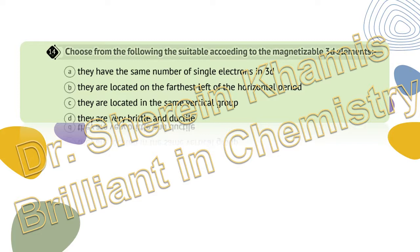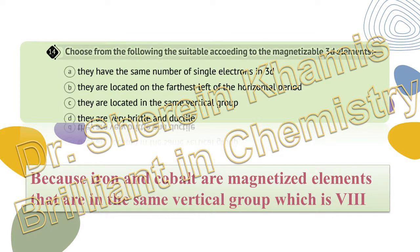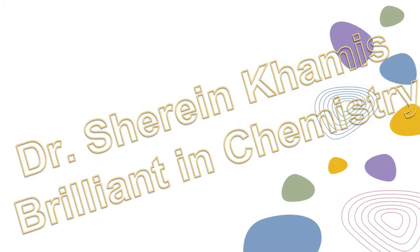Question 14 says: choose the suitable property that makes 3D elements magnetizable. The choices are: they have the same number of single electrons in 3D; they are located at the farthest left of the horizontal period; they are located in the same vertical group; or they are very brittle. The elements iron, cobalt, and nickel are all magnetizable and located in the same vertical group (VI3/group VIII). The right answer is letter C: they are located in the same vertical group.